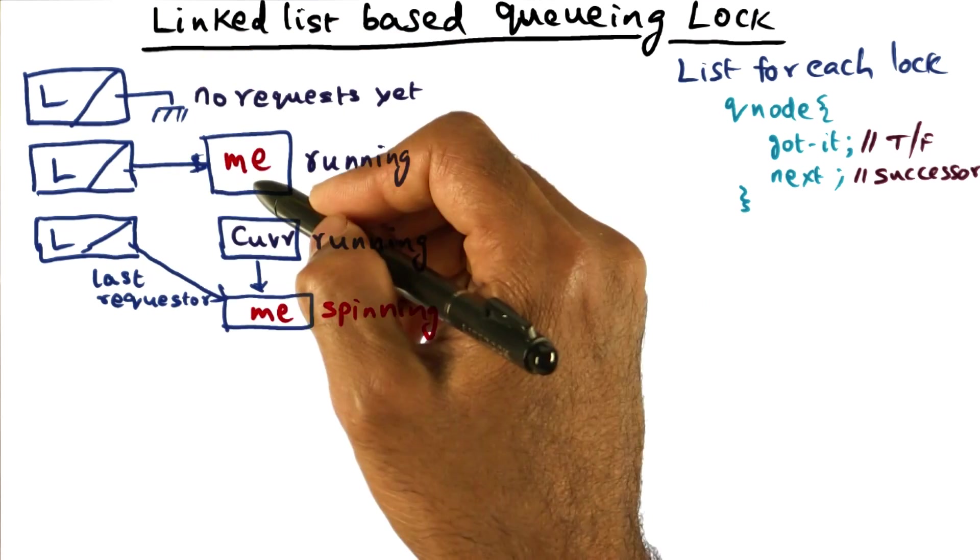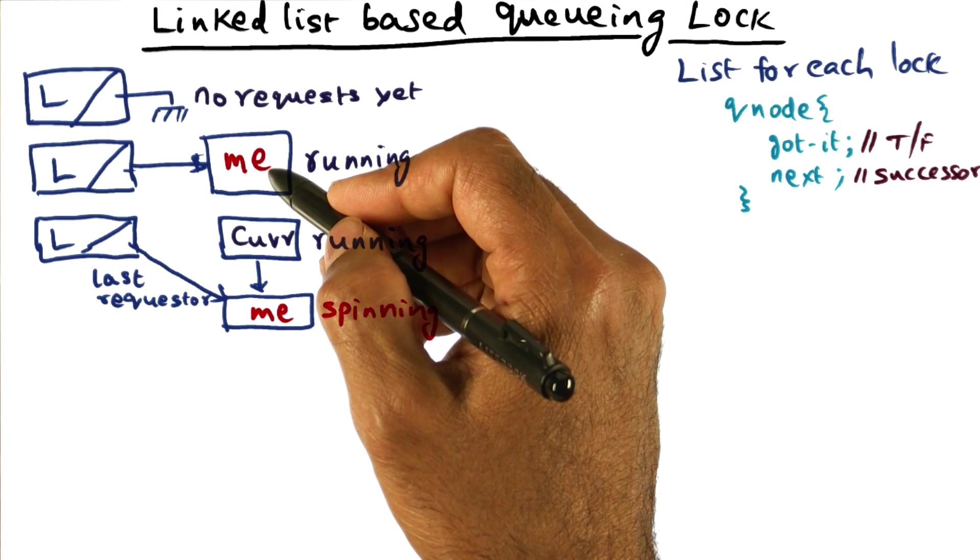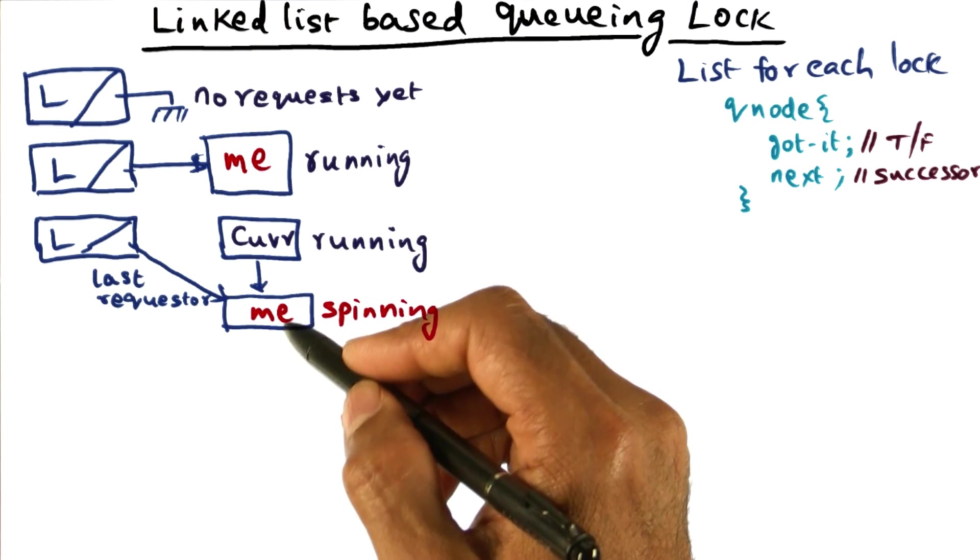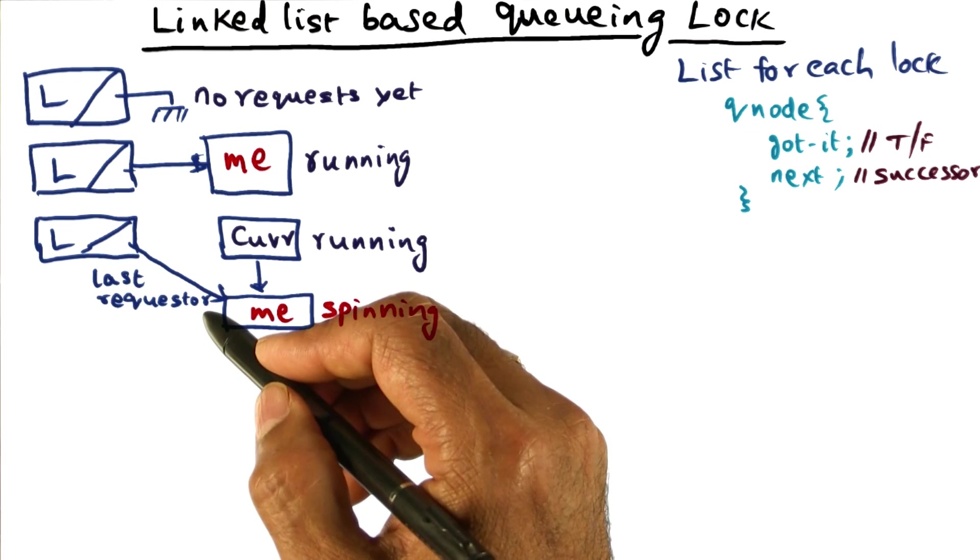In this case, the original case that I showed you, I was the only requester that was also last requester. But now, the queue has somebody using that particular lock.